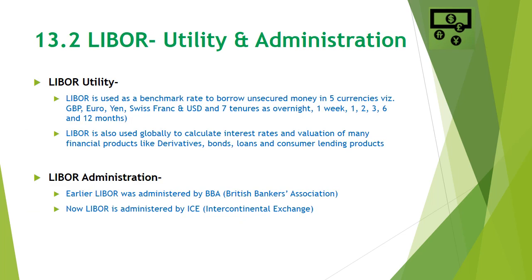LIBOR is a benchmark rate calculated on a daily basis as an average of rates submitted by a panel of banks in the UK. LIBOR is currently used as a benchmark rate to borrow unsecured money in 5 different currencies: Pound Sterling, Euro, Japanese Yen, Swiss Franc, and US Dollar. There are also 7 different tenures for which LIBOR is calculated: Overnight, 1 week, 1, 2, 3, 6, or 12 months. LIBOR is also used worldwide to calculate interest rates and valuations of many other financial products such as derivatives, bonds, loans, and consumer lending products. We have also seen interest rate swaps happening on the basis of LIBOR in US Dollars and Pounds.